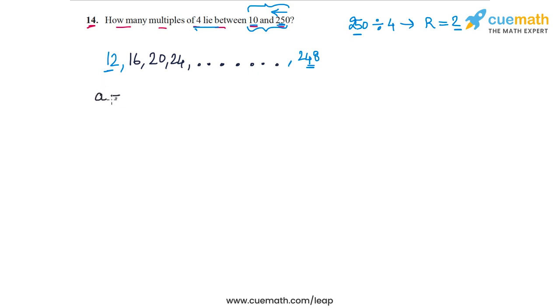And the first term of this arithmetic progression is 12, and the common difference is 4. Because to go from any multiple of 4 to the next multiple of 4, we will have to add plus 4.